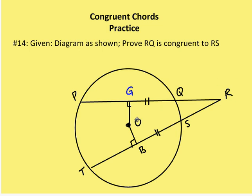Then I'm going to draw a line from O to R, and this is going to be my hypotenuse. I have a right angle here. I know that OG and OB are congruent, so by the HL postulate, triangle GOR is congruent to triangle BOR. Then I can say that GR is congruent to BR by CPCTC, and by subtraction, because GQ and BS are congruent, QR and RS are congruent.